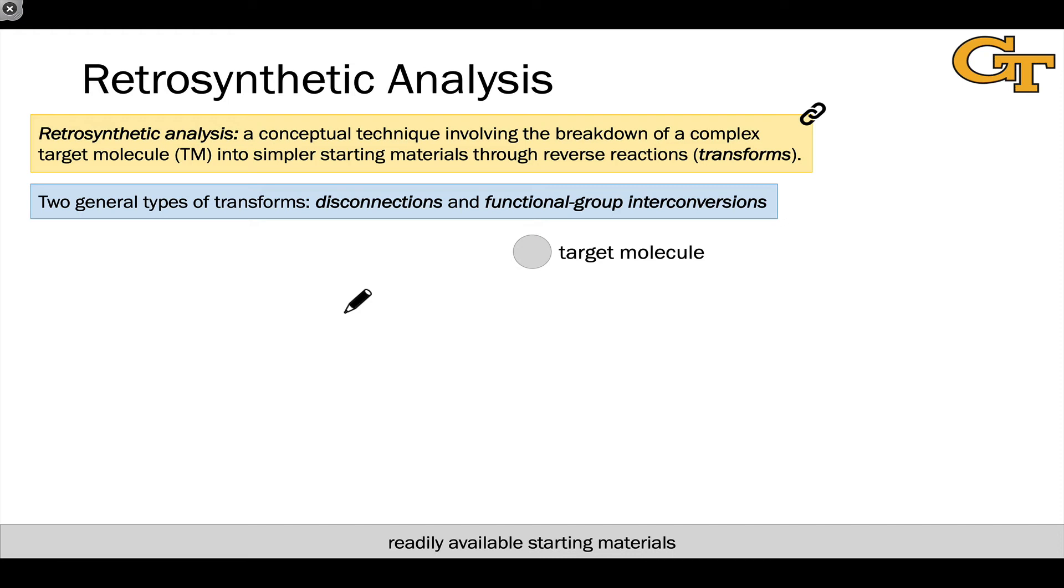Now most syntheses of complex organic molecules require multiple steps, so we have to apply the process of retrosynthetic analysis iteratively. We go from the target to a simpler starting material, and then we use that starting material as a target to get back to even simpler starting materials. And this tends to lead to several transforms being chained together to work backwards from the complex target to a set of readily available and simple, structurally simple, starting materials.